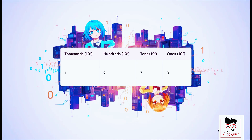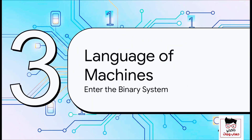So if you look at a number like 1973, you see it's not just a random string of digits — it's a recipe. This table shows us it's made of one thousands coupon, nine hundreds, seven tens, and three ones. Every number we write is basically just a list of how many coupons of each type we're holding. So we've pretty much mastered our 10 coupon system. But computers, well, they don't have 10 fingers. They have something much, much simpler. Let's see how this exact same logic builds the language of all modern technology.